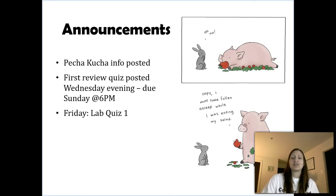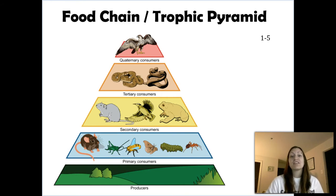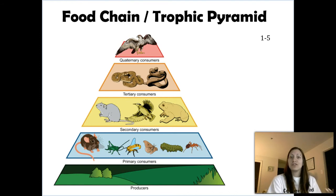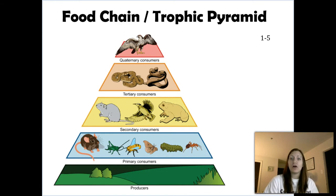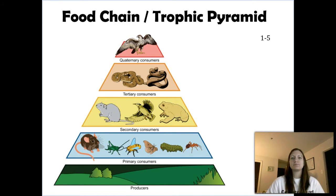Last class — or last video lecture — we finished talking about biological hierarchy. We talked about individual organisms and the classifications of those organisms. We had producers, which undergo photosynthesis. We have consumers, that undergo cellular respiration. And then we have decomposers. Don't forget, both decomposers and producers also undergo cellular respiration. So now we're going to talk about the relationships between those organisms — between producers and consumers, and even decomposers — and one way we can look at those relationships is a food chain or a trophic pyramid.